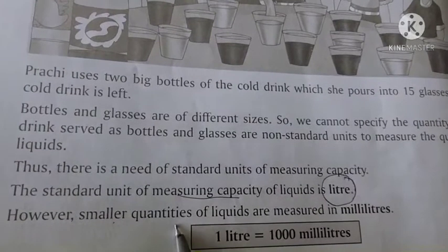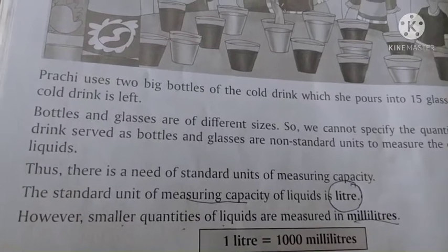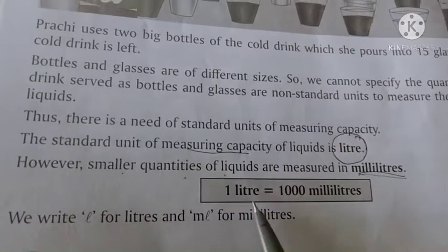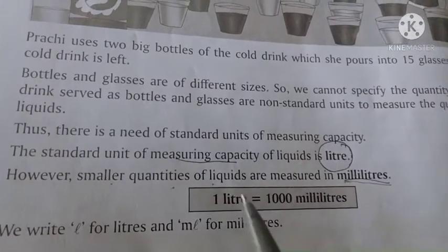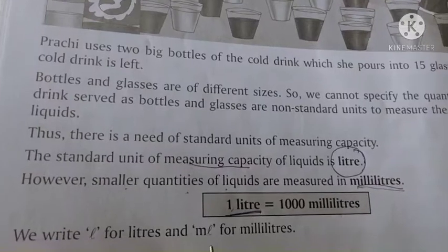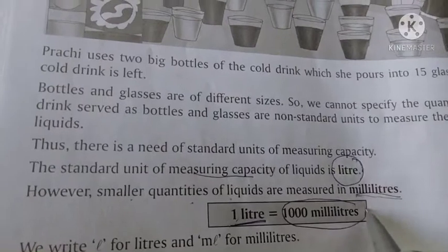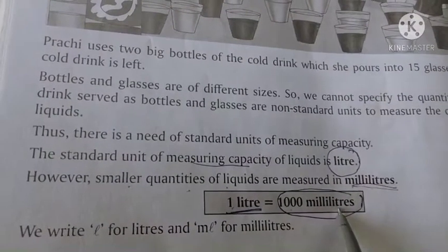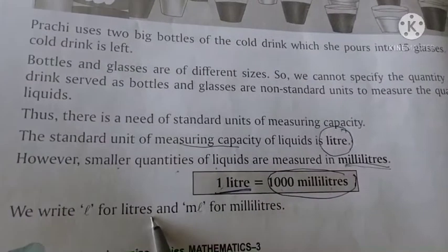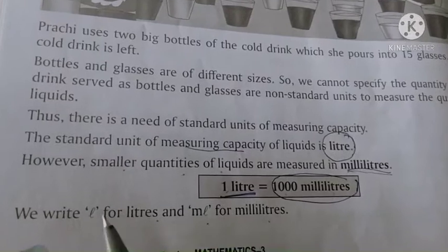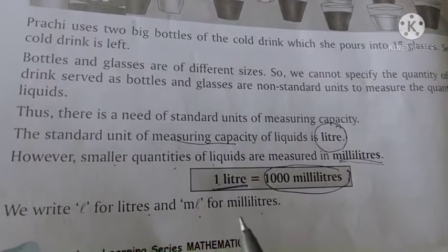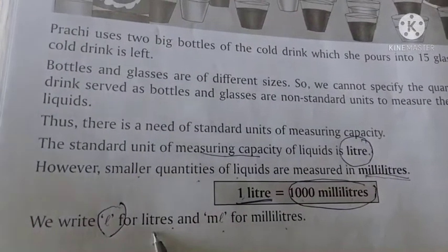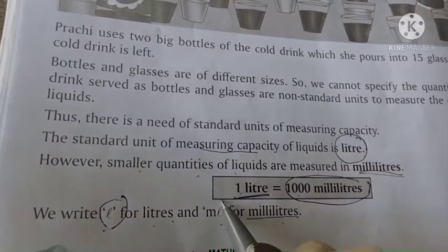However, smaller quantities of liquid are measured in milliliters. Jo smaller quantity hoti hai, usko hum milliliter mein measure karte hain. One liter is equal to one thousand milliliters. We write L for liters and ML for milliliters.